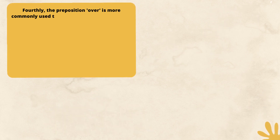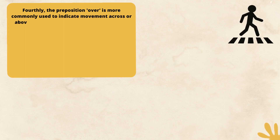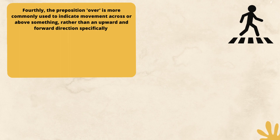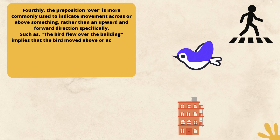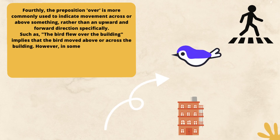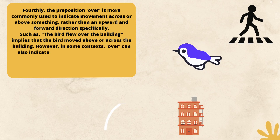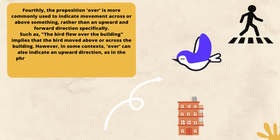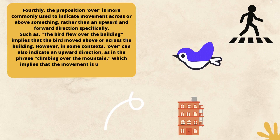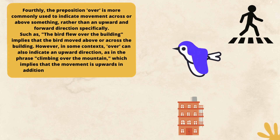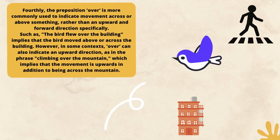Fourthly, the preposition 'over' is more commonly used to indicate movement across or above something, rather than an upward and forward direction specifically. Such as: the bird flew over the building, which implies that the bird moved above or across the building. However, in some contexts, 'over' can also indicate an upward direction, as in the phrase 'climbing over the mountain,' which implies that the movement is upwards in addition to being across the mountain.